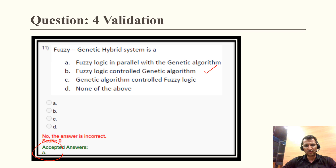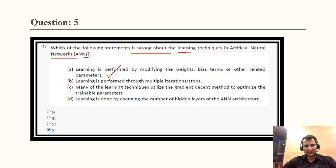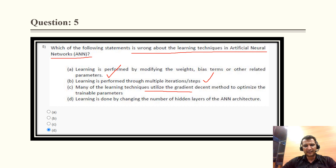Question 5 asks which statement is wrong about learning techniques in ANN. The first three statements are correct: learning is performed by modifying the weights and bias terms; learning is performed through multiple iterations — more iterations means more learning; and many learning techniques utilize gradient descent to optimize trainable parameters. All three are absolutely correct.